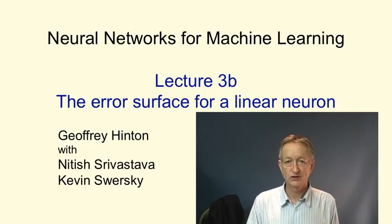In this video, we're going to look at the error surface for a linear neuron. By understanding the shape of this error surface, we can understand a lot about what happens as a linear neuron is learning.